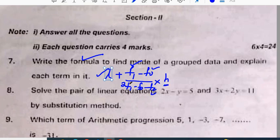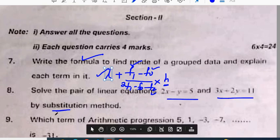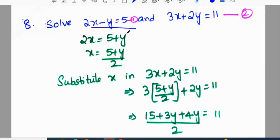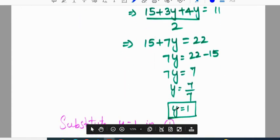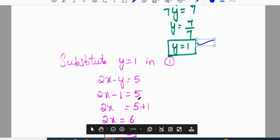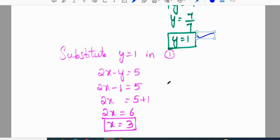Solve the pair of linear equations 2x minus y is equal to 5, 3x plus 2y is equal to 11 by substitution method. Out of two equations we need to take any one and convert into the x term. Left side should be x, converting all terms to right side it will become (5 plus y) by 2. Now substitute this x value in the second equation: 3 into (5 plus y) by 2 plus 2y is equal to 11. We will get the y value as 1, and when y equals 1, x value is 3.